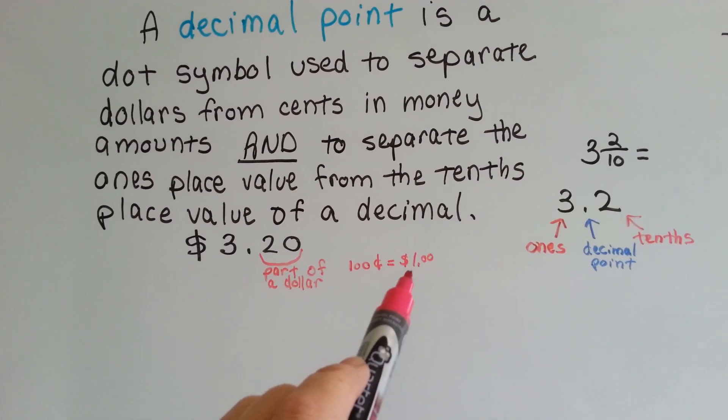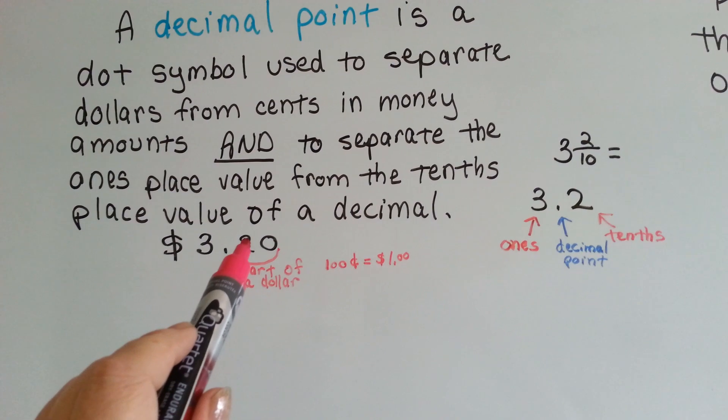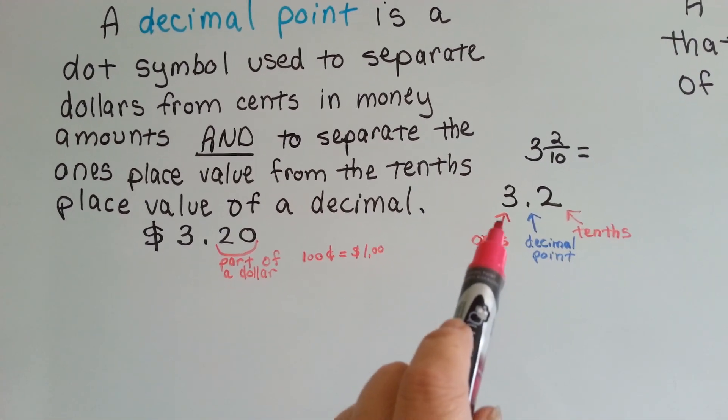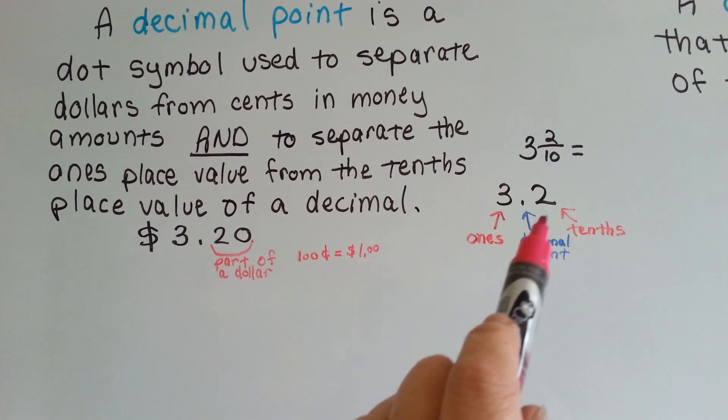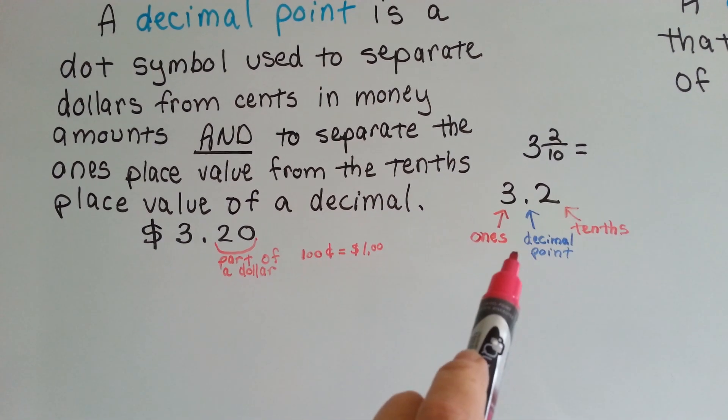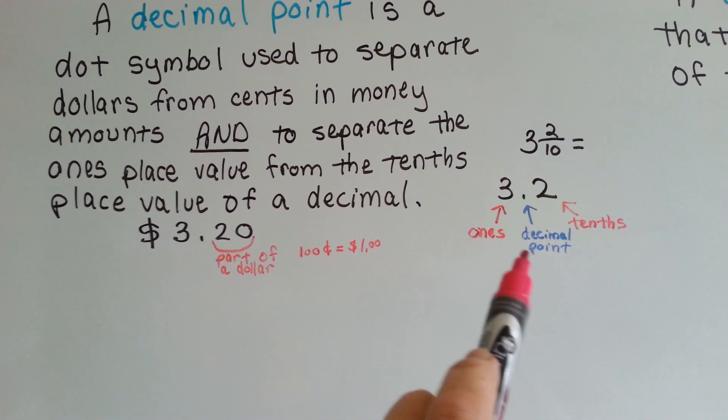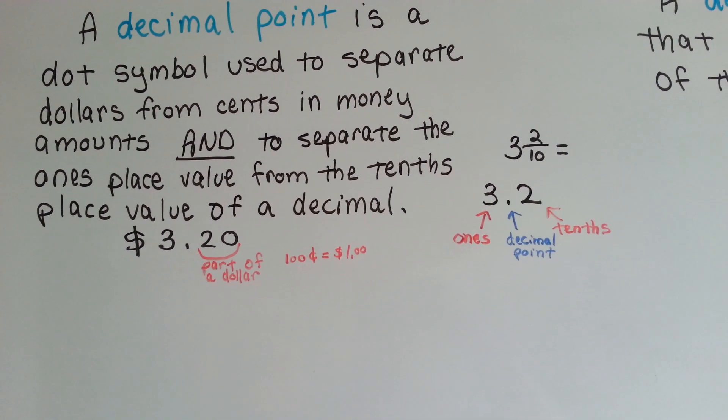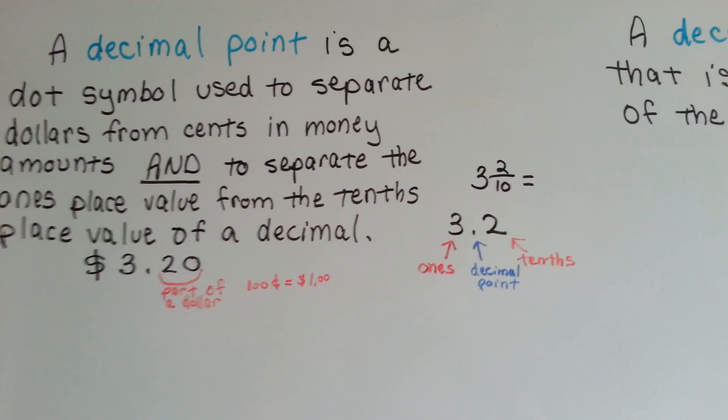One hundred cents is equal to a full dollar, so this is twenty hundredths. Three point two is three and two tenths. That's the decimal point, that's a whole number three, and that's the tenths on the right side of the decimal.